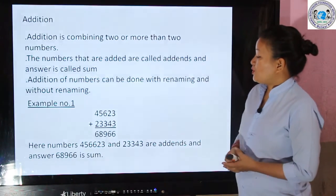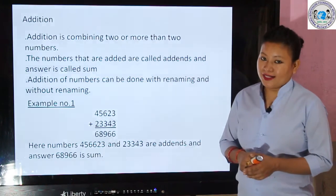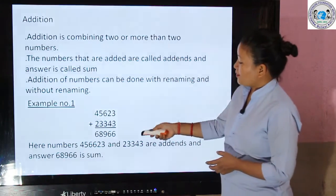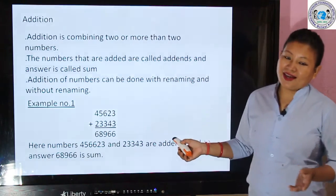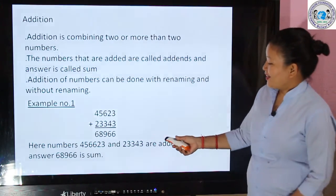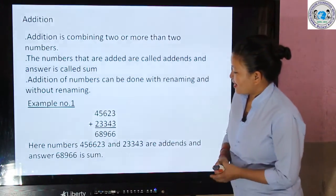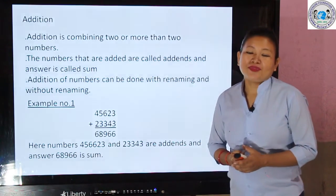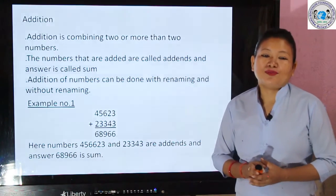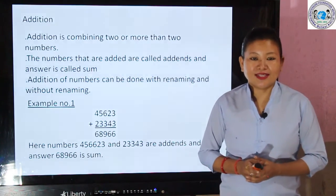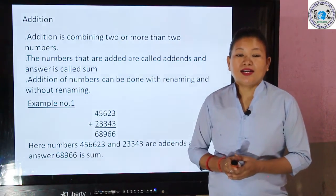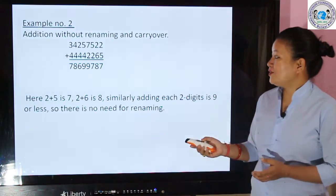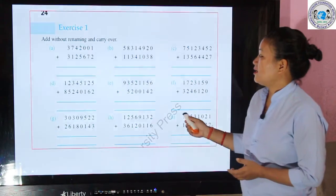These two numbers are the addends, and the answer 688966 is the sum. In our book, in Exercise 1, there are some questions where we do not need to do renaming.